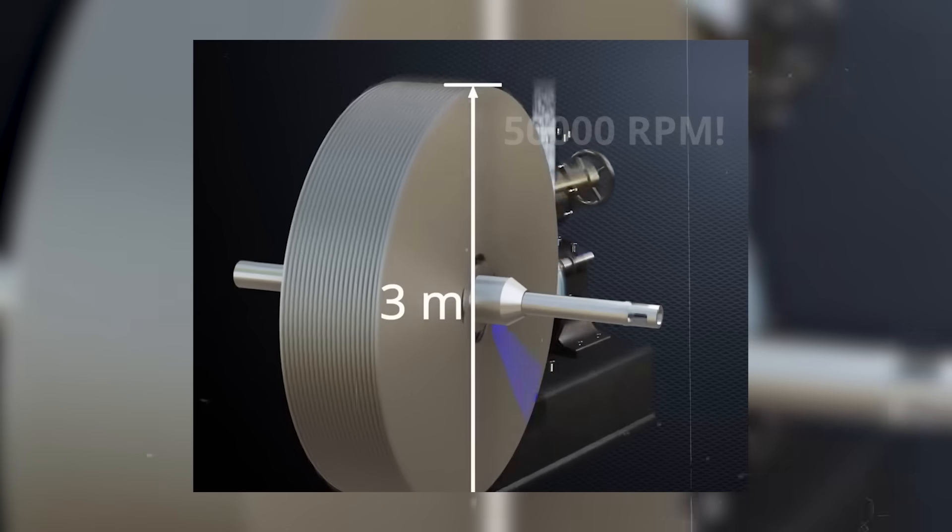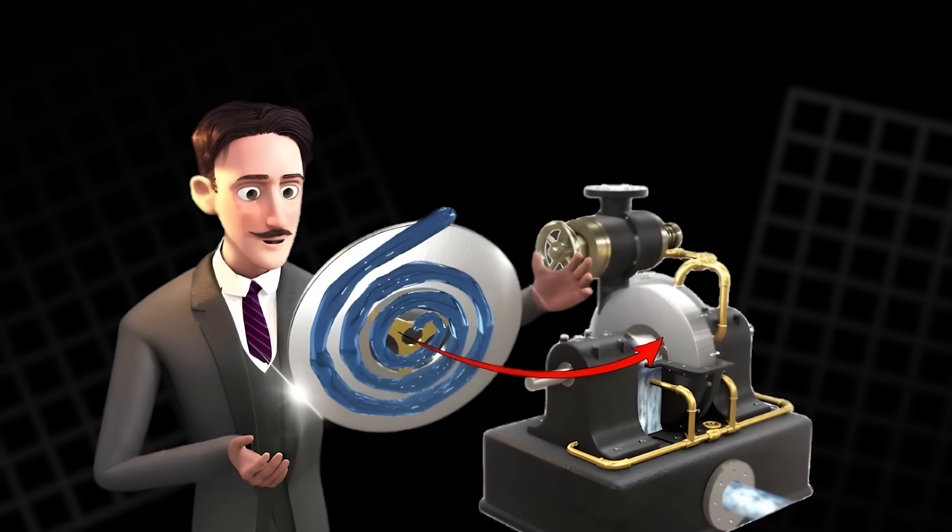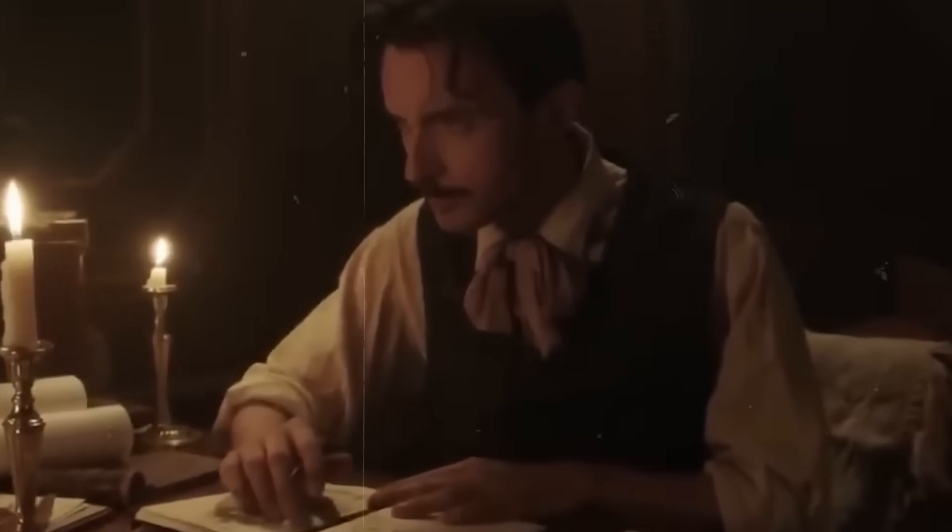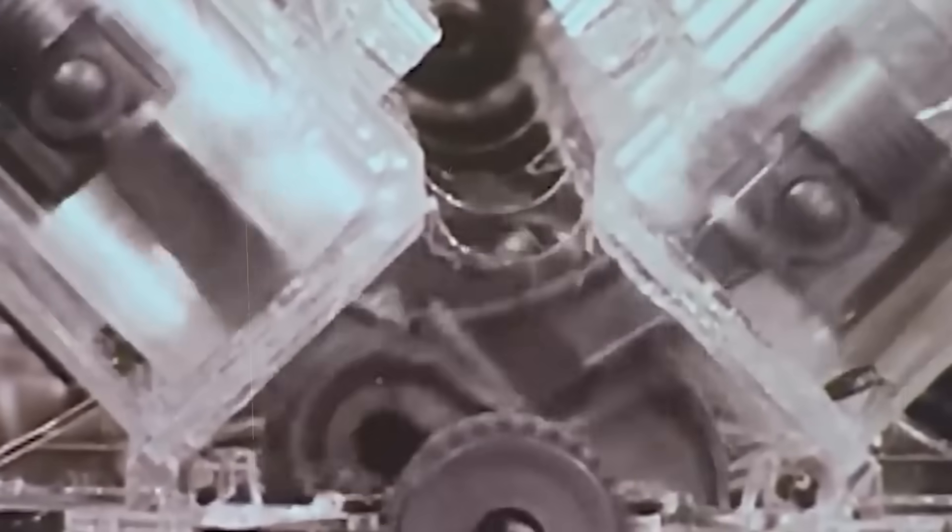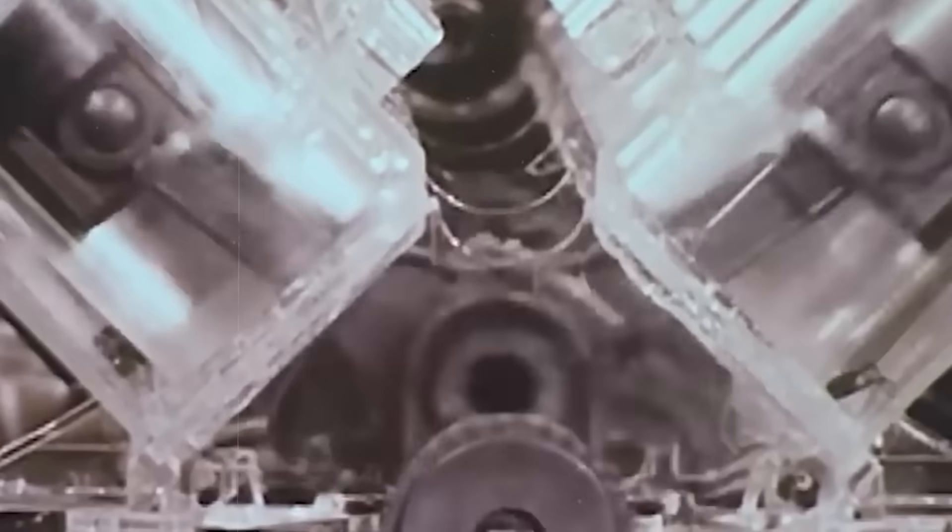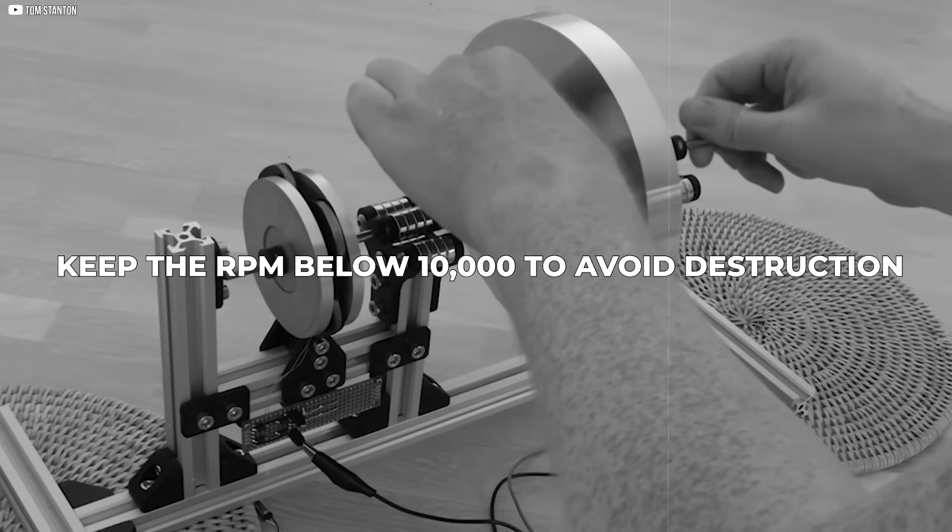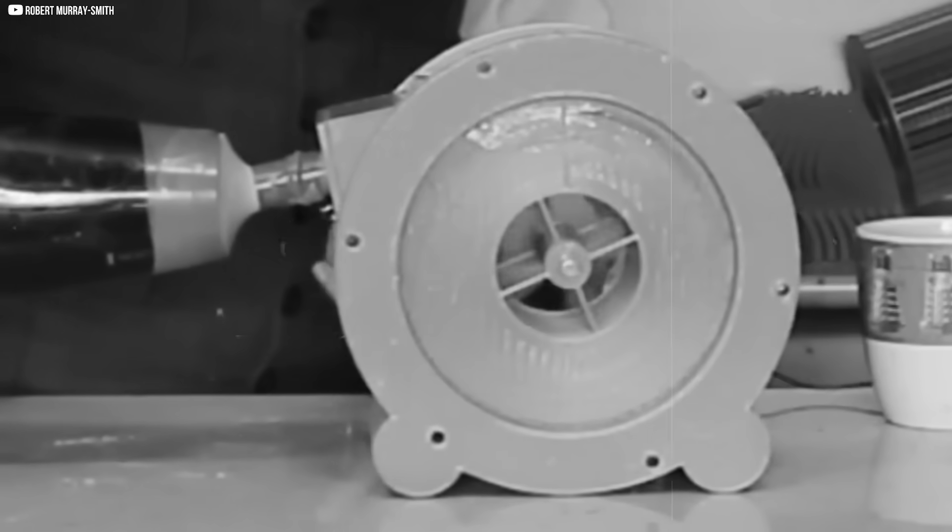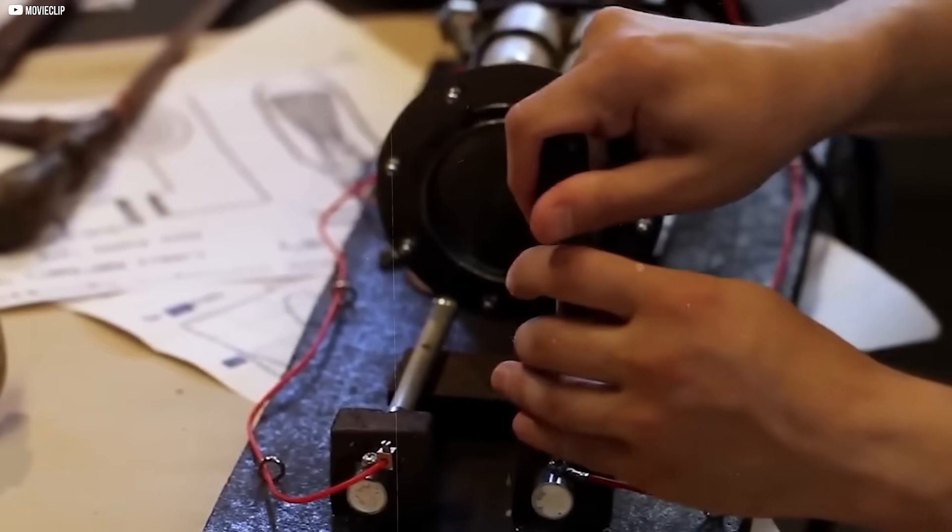But that speed brought danger. At such velocities, the discs began to warp. The metal stretched under the force like rubber pulled too tight. Eventually, they buckled. Tesla hadn't predicted this kind of strain. The materials of his time simply couldn't handle the extreme centrifugal force. So, he had to slow it down. Keep the RPM below 10,000 to avoid destruction.